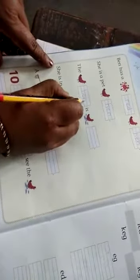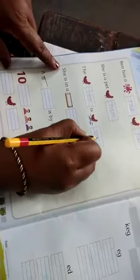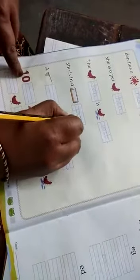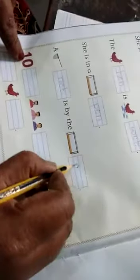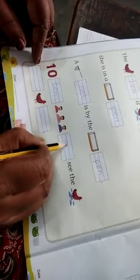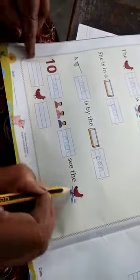The hen is wet. She is in a pen. A net is by the pen. Ten men see the hen.